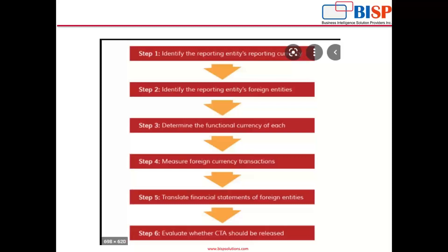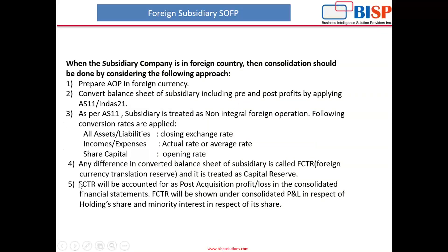After translation, evaluate whether CTA — Foreign Currency Cumulative Translation Adjustments — should be released into earnings. CTA arises from translating the foreign entity's financial statements into the parent's reporting currency. When you have a foreign subsidiary company and need to consolidate, the following approach should be taken: first, prepare the AOP in foreign currency; then convert the balance sheet of the subsidiary including pre and post profits by applying AS11 and India's AS21 — these are the accounting standards followed in India.